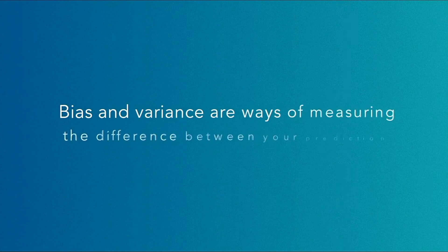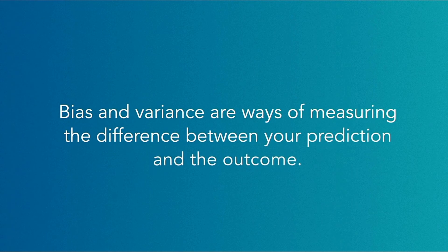Remember that bias and variance are ways of measuring the difference between your prediction and the outcome. They're not right and wrong answers but different dials that you need to improve your predictions.